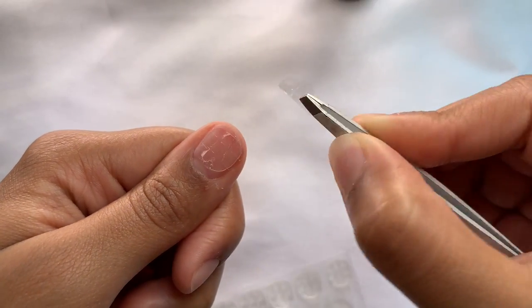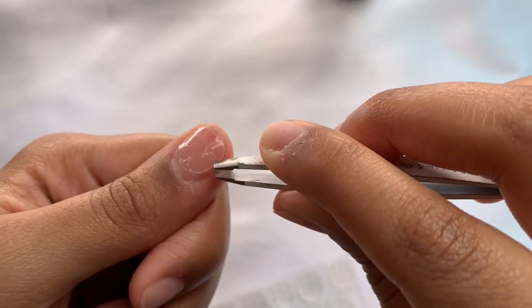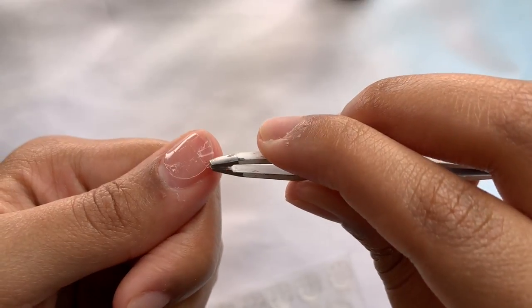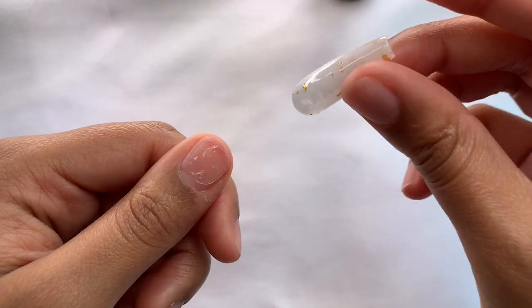So this is where the tweezers come in and I like to use these because I'm able to grab the plastic a little bit better because with my fingers, it doesn't quite work, especially if I already have one hand with nails on, it's just a mess. So I like to use tweezers to get all the plastic off.